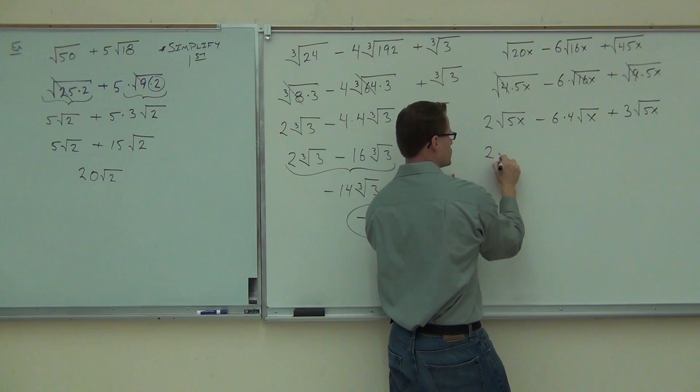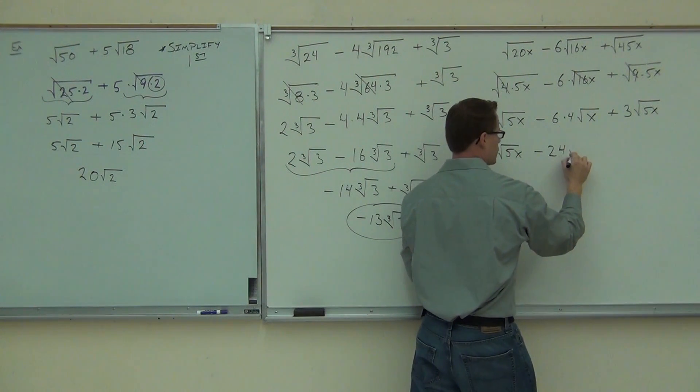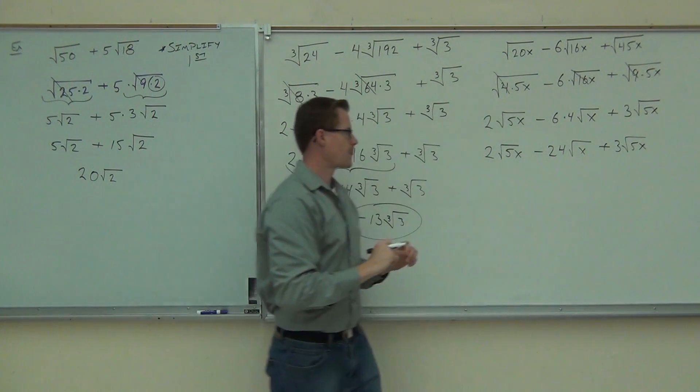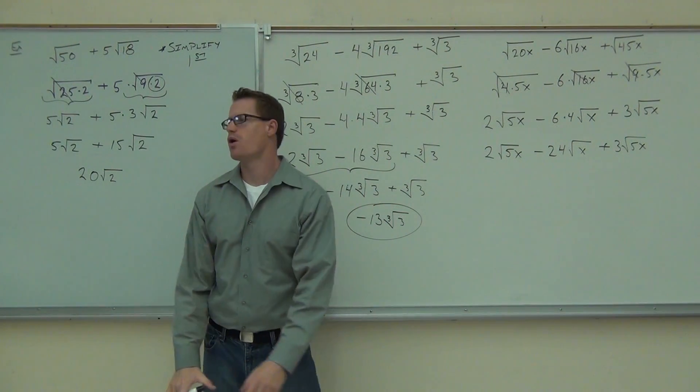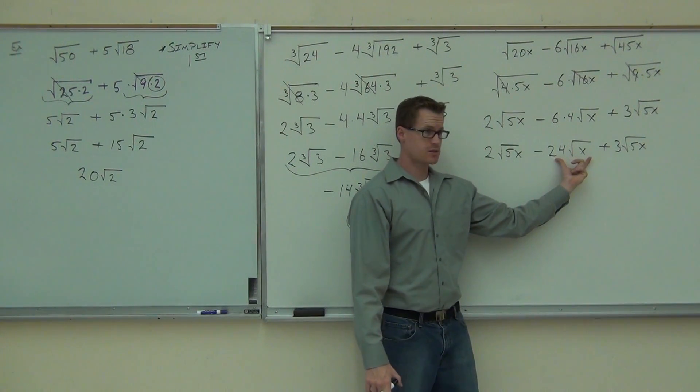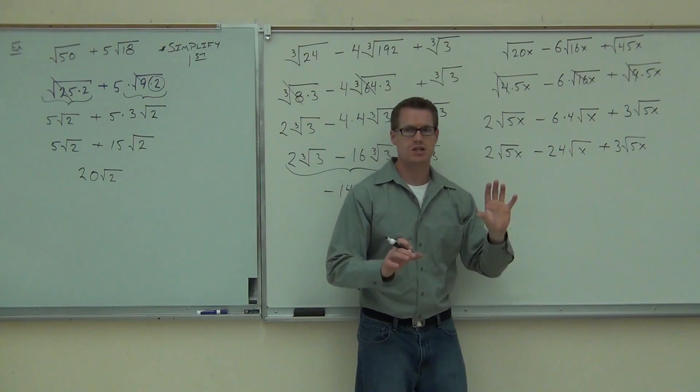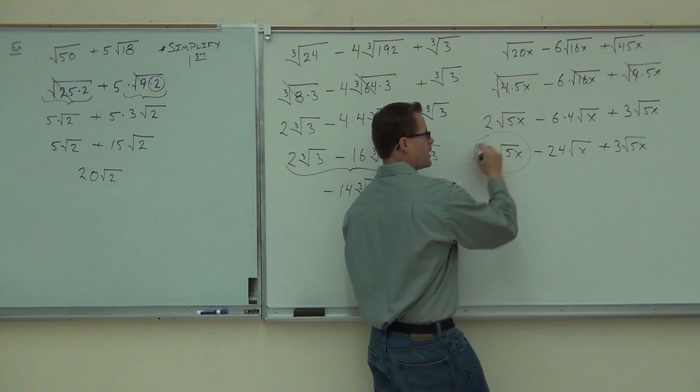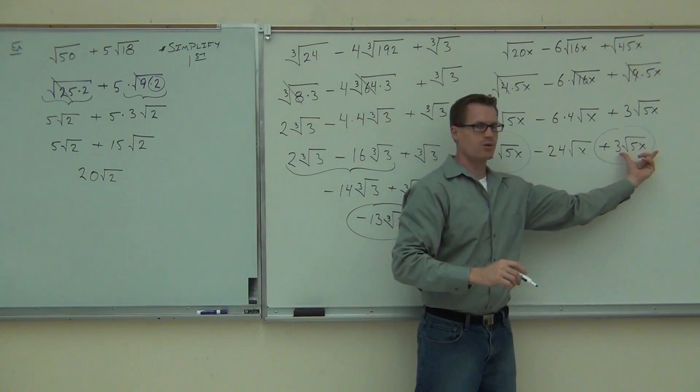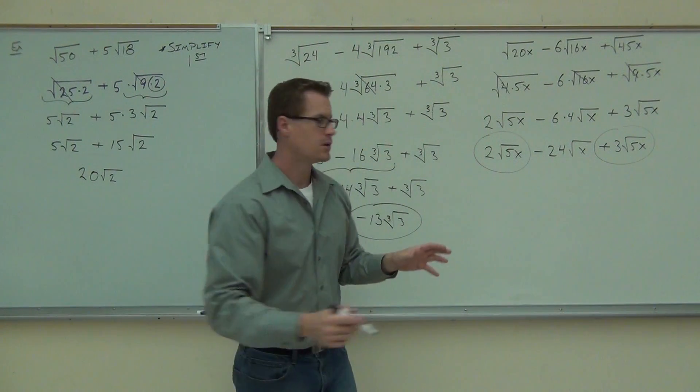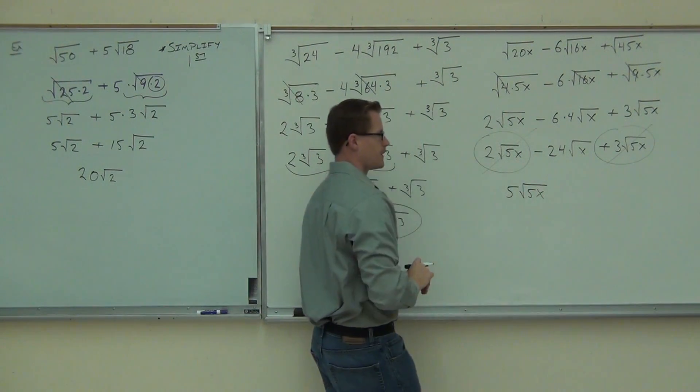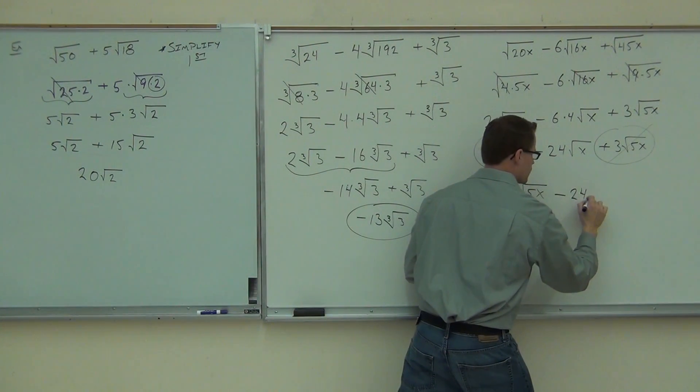Let's do one more step. Multiply what we can. 2 root 5x minus 24 root of x. Remember, we're multiplying 24. Plus 3 root 5x. Why can we only combine 2? Why can we only combine 2 of these? What's wrong? While we do have square roots everywhere, this one worked out to be a square root of x. This was a square root of 5x. This was a square root of 5x. So just like we had in the opening of this problem, you can only combine like terms. You can only combine like radicals.